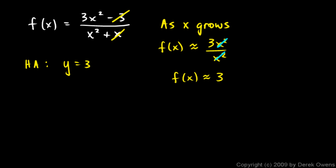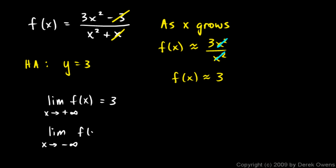In limit notation, we'd say: the limit as x approaches positive infinity of f(x) is equal to 3. And you can also say the limit as x approaches negative infinity of f(x) equals 3. You could graph that and see a horizontal asymptote at y equals 3, but you don't have to graph it. You can get the same result just analytically, by looking at the function and thinking about what happens to the numerator and denominator as x gets really, really large in either the positive or the negative direction.